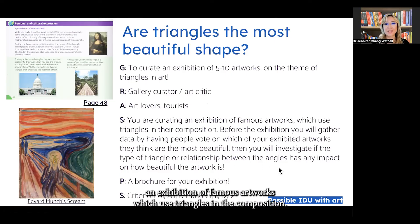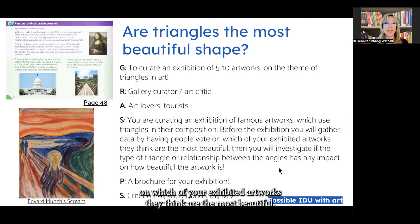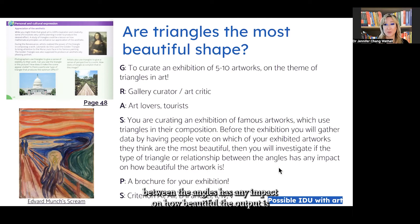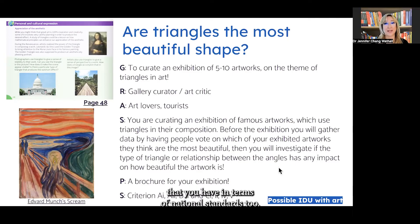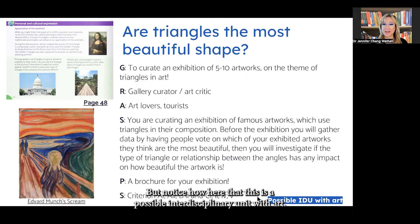Here is the situation or scenario: you are creating an exhibition of famous artworks which use triangles in their composition. Before the exhibition you'll gather data by having people vote on which of your exhibited artworks they think are the most beautiful, and then you'll investigate if the type of triangle relationship between the angles has any impact on how beautiful the artwork is. The product is going to be a brochure for your exhibition, and the standards can be the MYP criteria or core standards or any success criteria in terms of national standards too. Notice how this is a possible interdisciplinary unit with art.